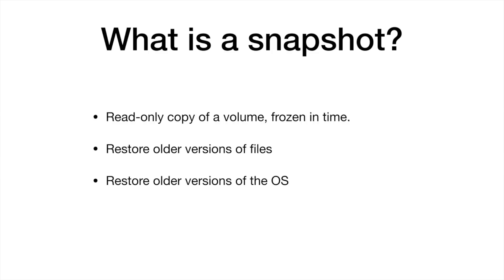When you combine snapshots with CCC bootable backups, we can take that a step further and you can restore older versions of the operating system. Suppose you apply an OS update and a few hours later you realize that things have been working really poorly since you applied that update. You can boot from your CCC backup and then restore the system to its previous state from an earlier snapshot.